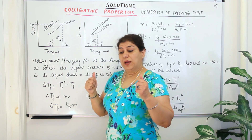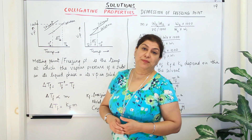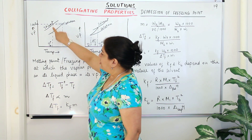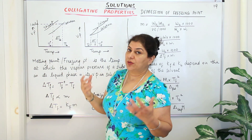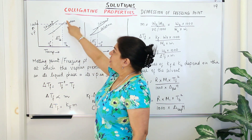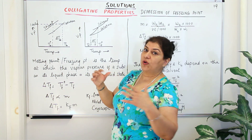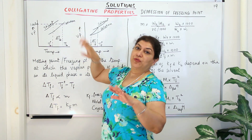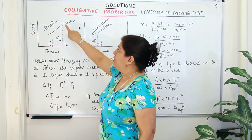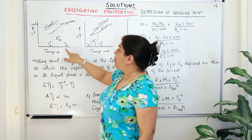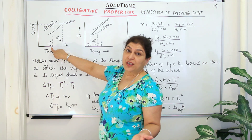Boiling point is that temperature at which the vapor pressure of any substance becomes equal to the atmospheric pressure. At temperature Tb0 the vapor pressure of the solvent becomes equal to the atmospheric pressure. But when you add the solute, the vapor pressure of the solution is lesser, so you have to heat it up even more so that the vapor pressure of the solution becomes equal to the atmospheric pressure, giving a higher boiling point.